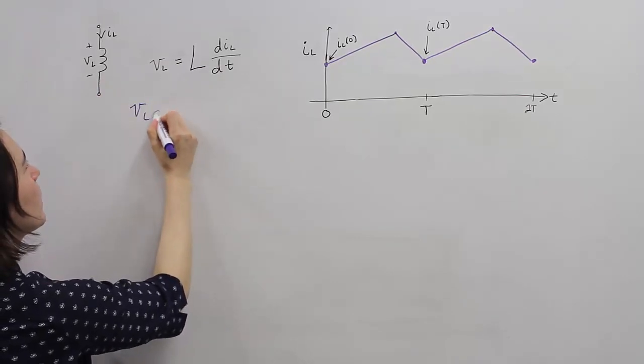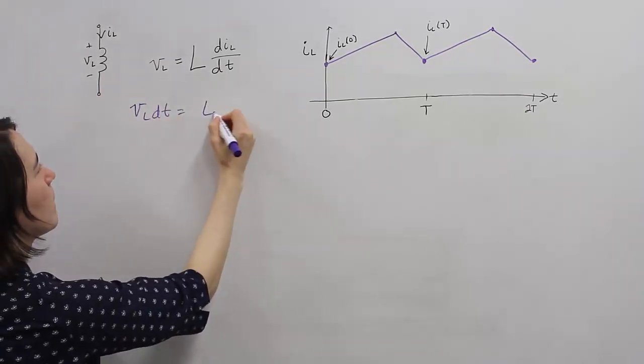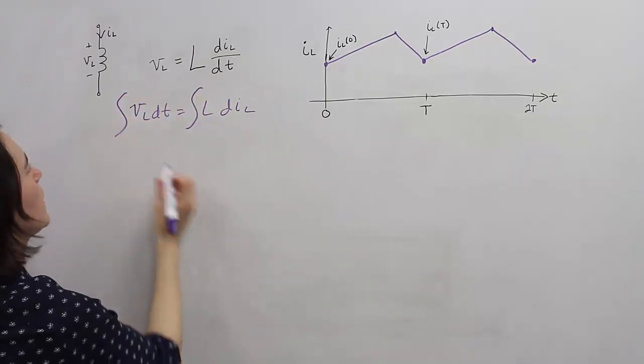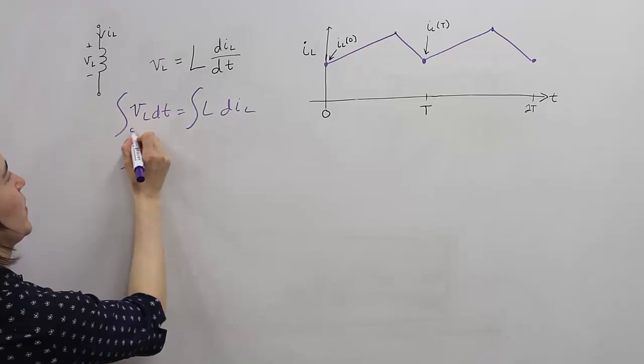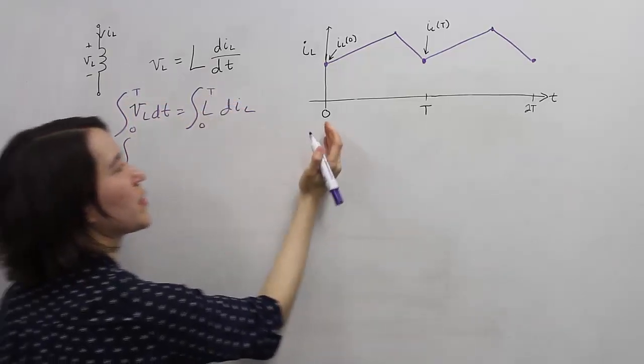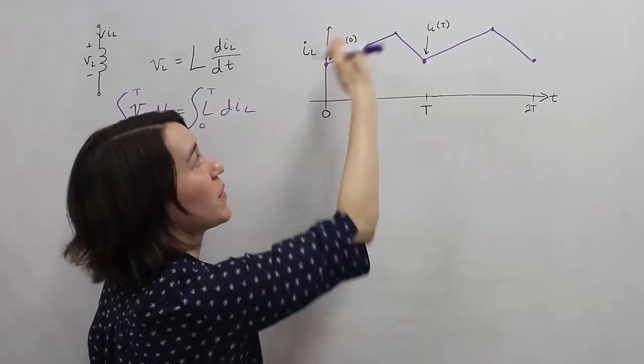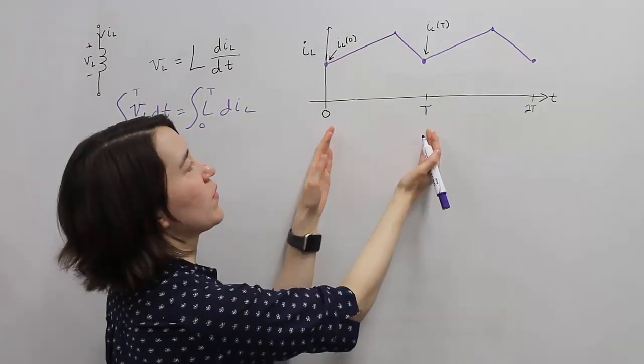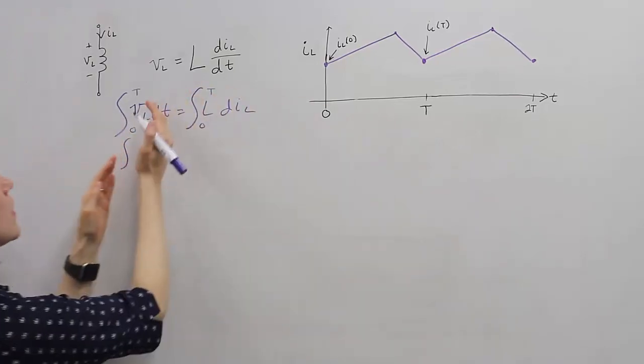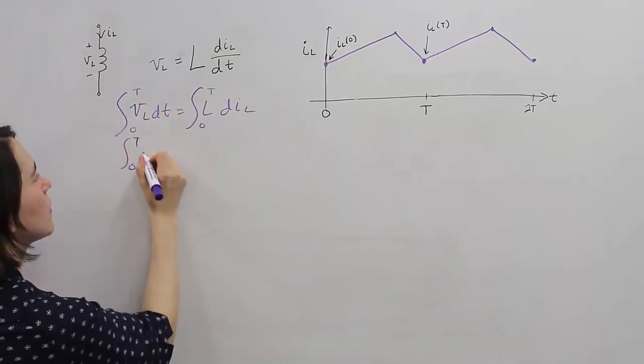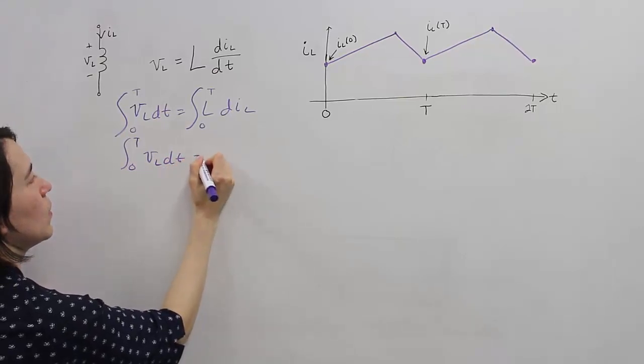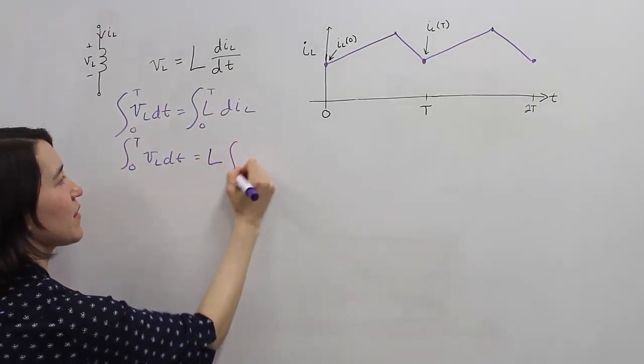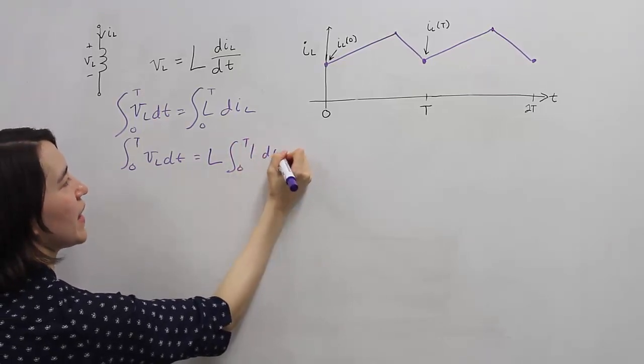Here we're going to integrate from 0 to T, because we're going over one period. This is a repeating periodic signal, so we want to integrate over 0 to T. And we're going to take the L out because that's constant and integrate 0 to T of just di_L.